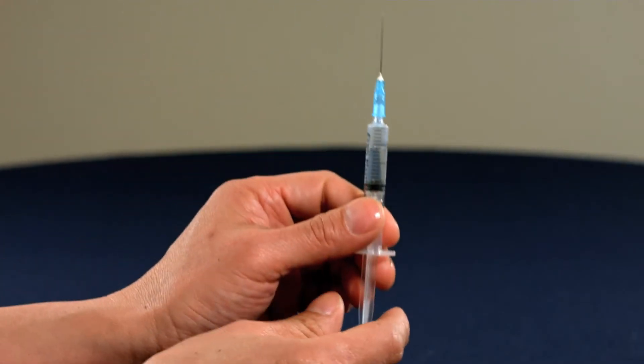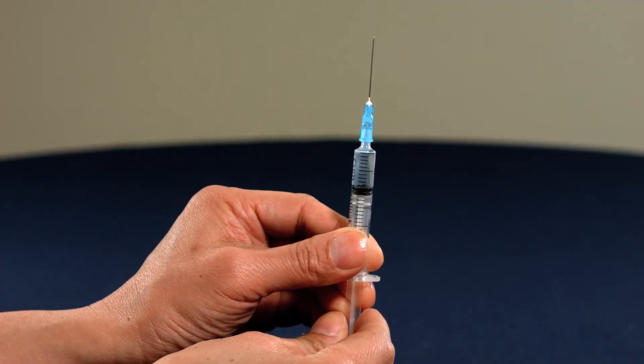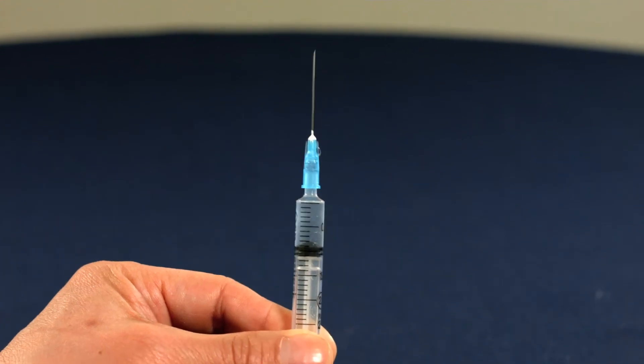Hold the syringe at eye level and tap the barrel to remove any air bubbles. Expel any air by pressing the plunger until a drop of liquid forms at the top of the needle.